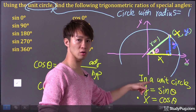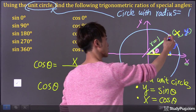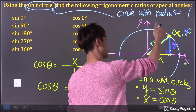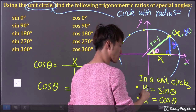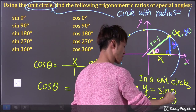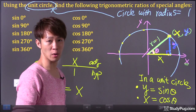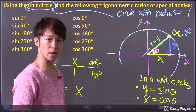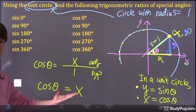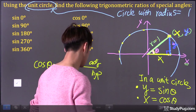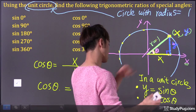So in a unit circle, for any point on the unit circle, the Y-coordinate is going to represent sine theta, and the X-coordinate is going to represent cosine theta. That's what we just derived — it's actually quite easy to derive. So let's put this information on the unit circle.